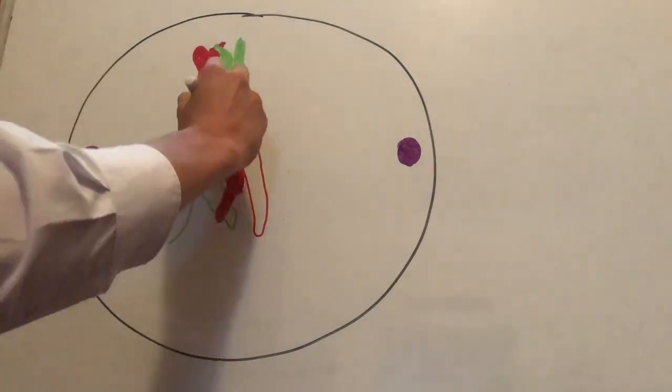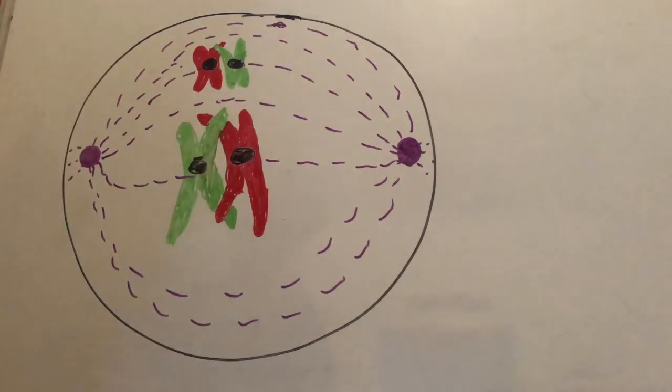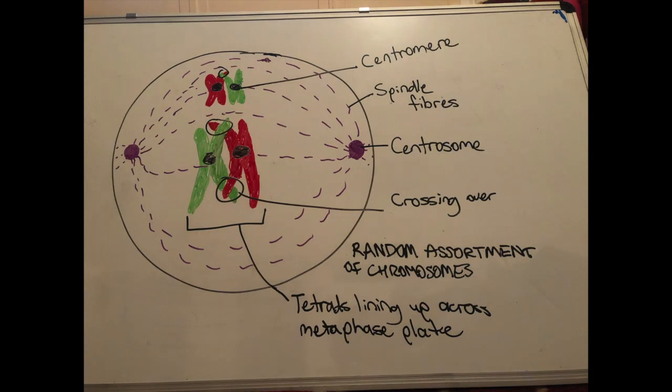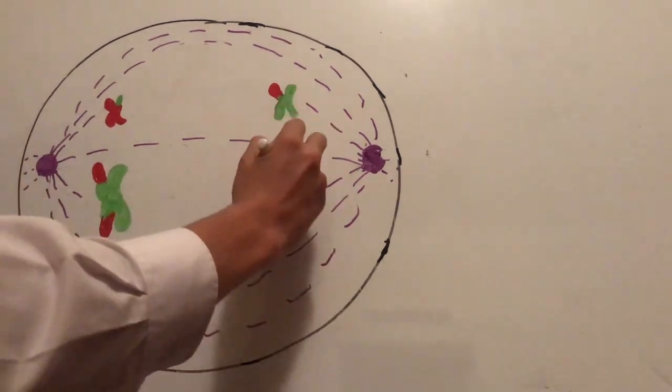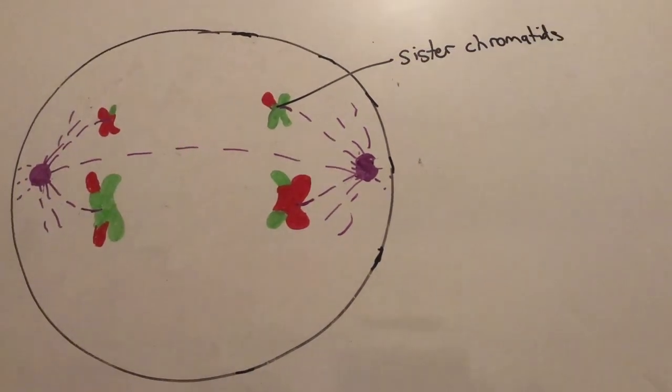In metaphase 1, the tetrads line up across the metaphase plate where the random assortment of chromosomes known as independent assortment occurs. In anaphase 1, homologous chromosomes separate with the sister chromatids remaining attached at the centromere and are pulled by the spindle fibres to opposite cell poles.